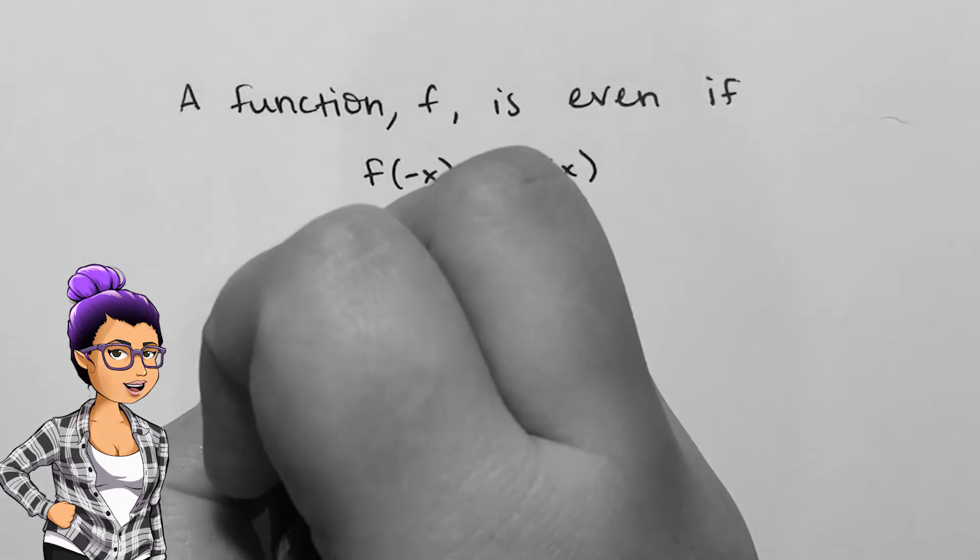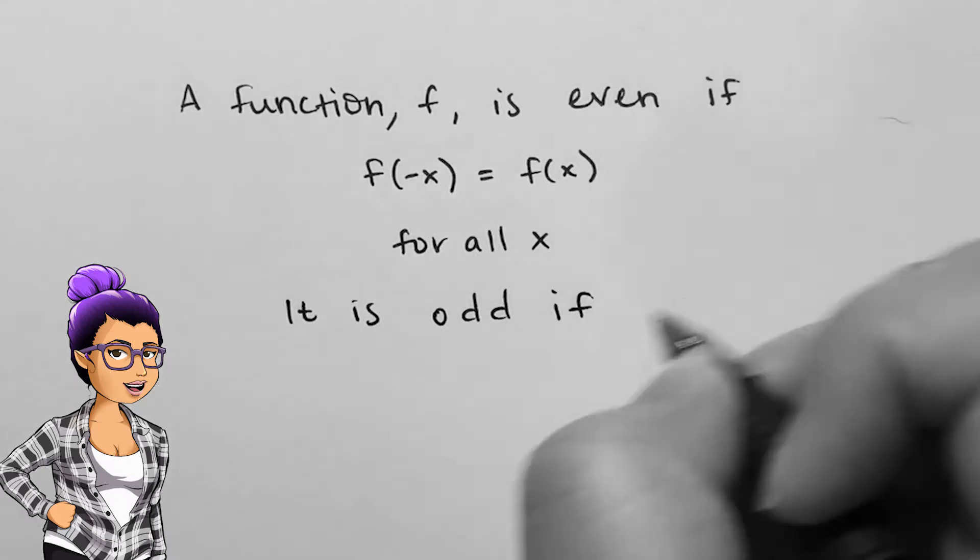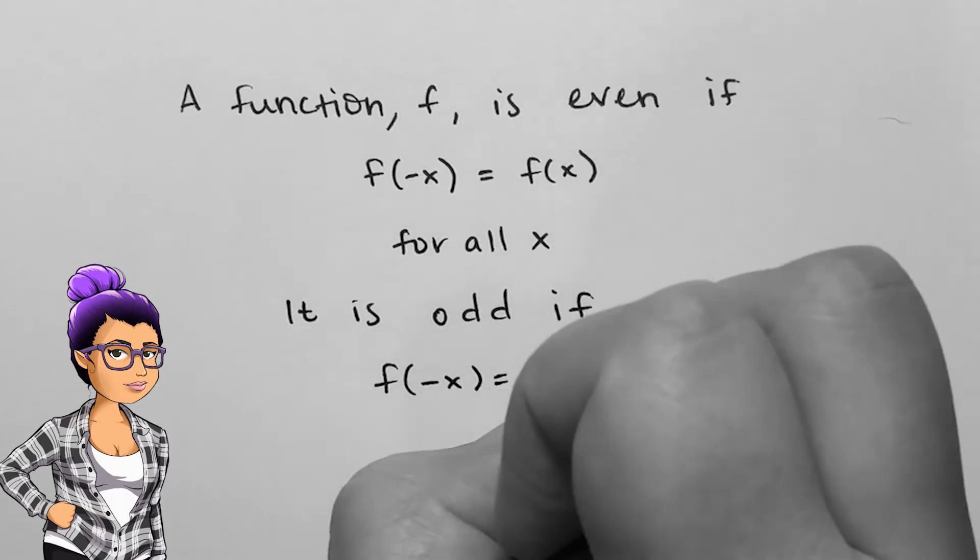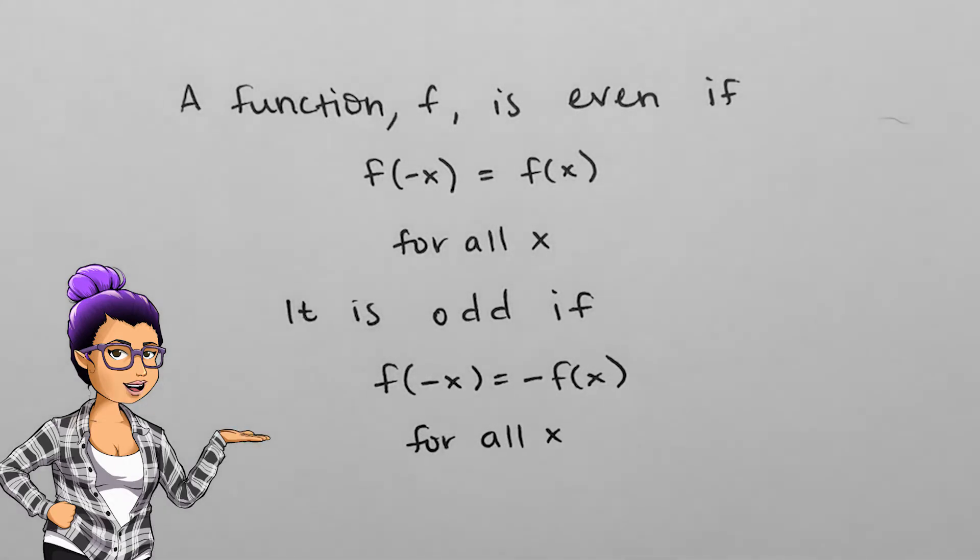A function will be odd though if every x has that f of negative x is the same as negative f of x. So if we plug in negative x, the end result is the exact opposite sign. An example of this is the reciprocal function.